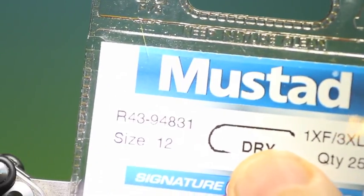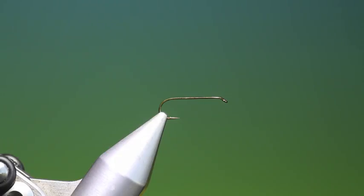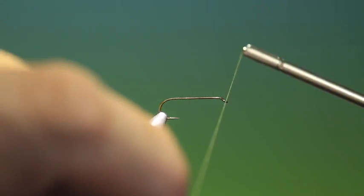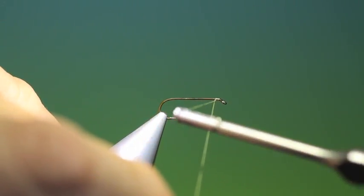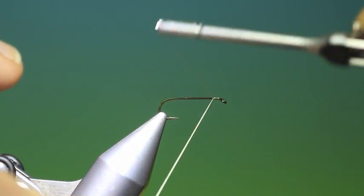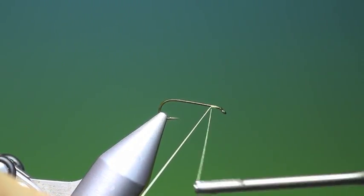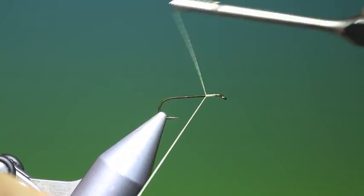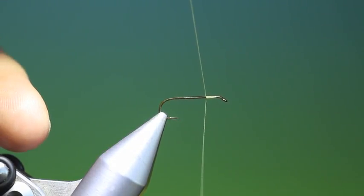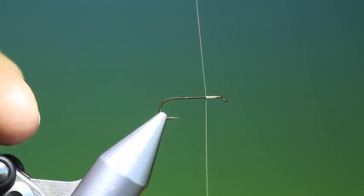Okay, we'll start with the Mustard R43. This is a size 14. This is a very effective hatching midge that I use a lot.